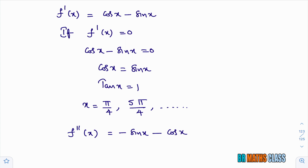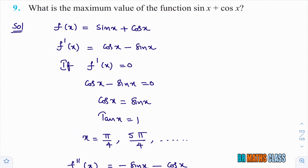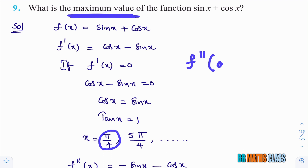One important point: they are asking for the maximum value. Where the function is maximum, at that point f double dash of a is less than 0. If f double dash of a is less than 0, then we say that f of x is maximum at x equals a.